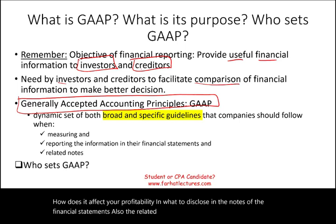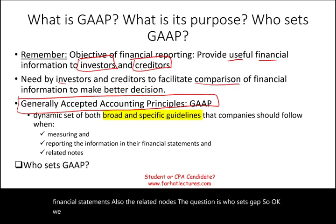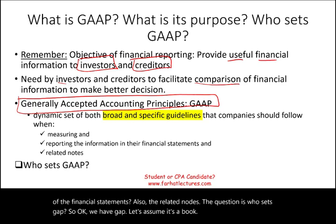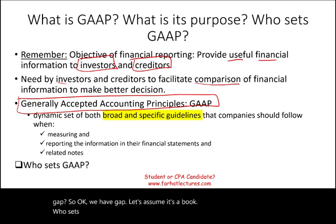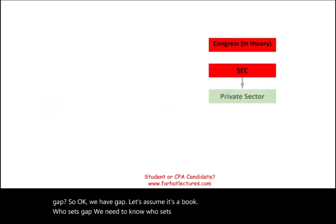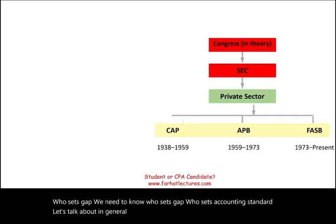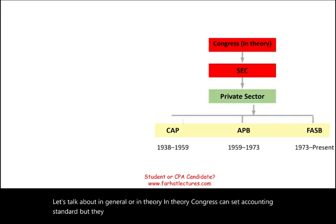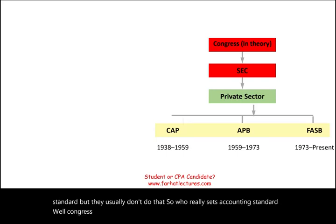The question is: who sets GAAP? In theory, Congress can set accounting standards, but usually they don't. Instead, Congress technically delegated this process to an organization called the SEC — the Securities and Exchange Commission.